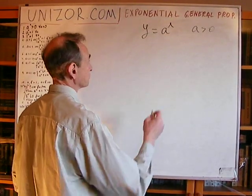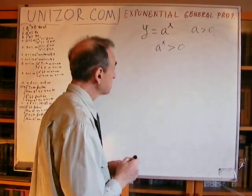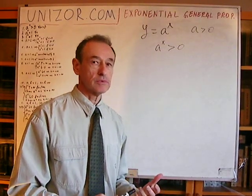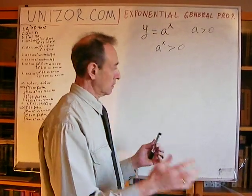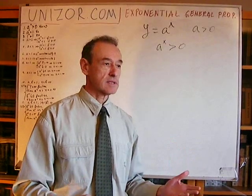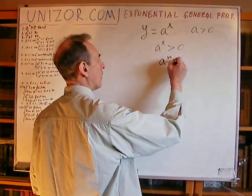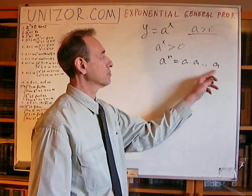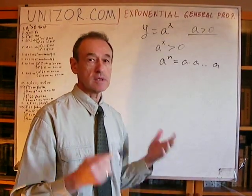Property number one: exponential function is always positive. I will try to prove, as rigorously as possible, all these properties. Why is a to the power of x positive? Let's consider the definition, starting from x natural. So a to the power of n is a times a, etc. A is always a positive number. If you multiply a positive number by a positive number, it will be a positive number. So for any natural n, it's positive.